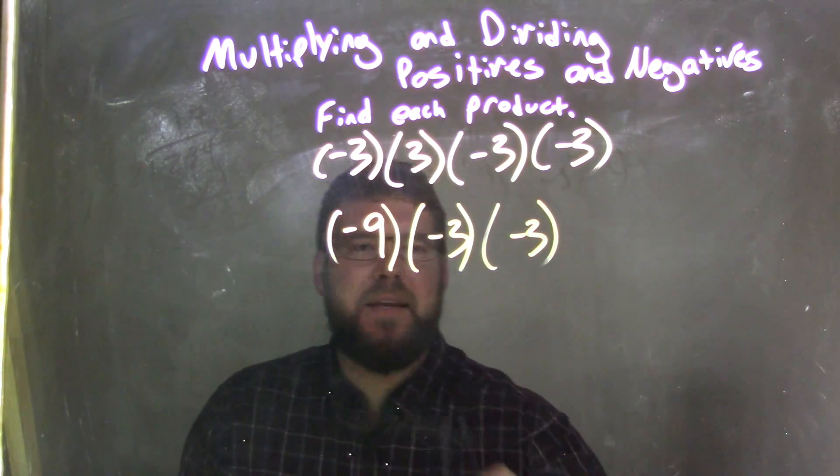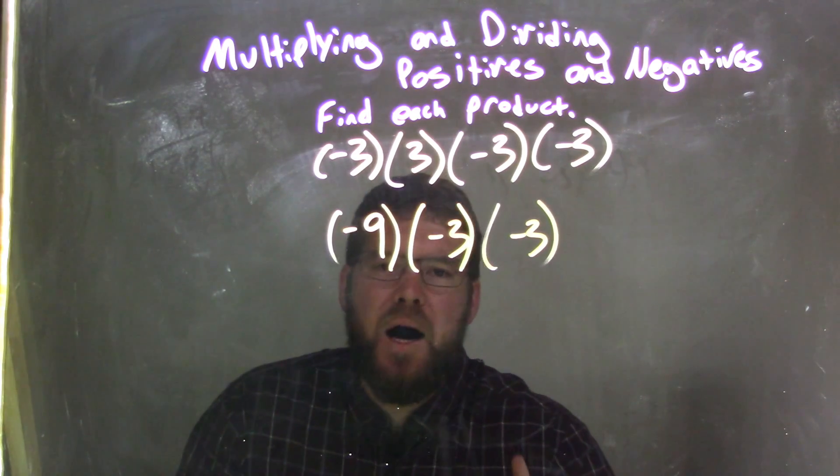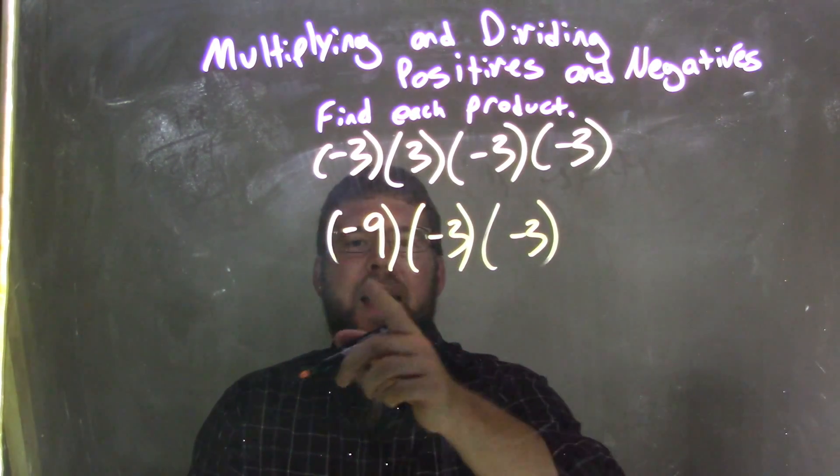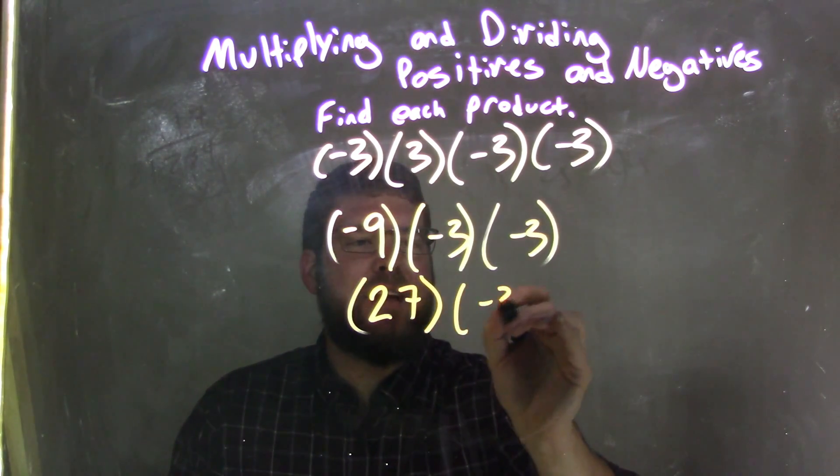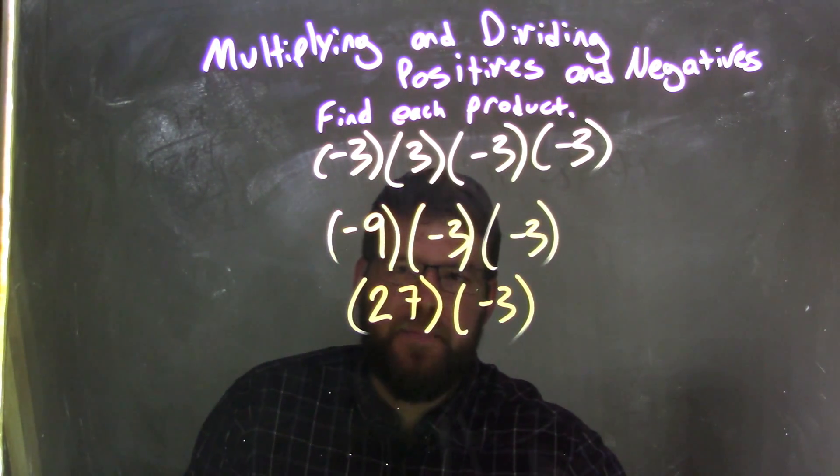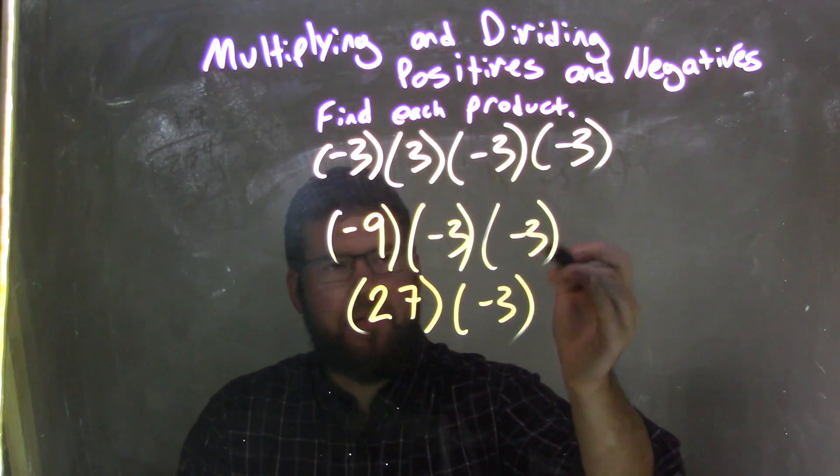So negative 9 times negative 3, that's a positive 27. A negative times a negative is a positive. So now we have a positive 27 here and we have a negative 3 right there on the side. We bring down this last negative 3, this last one right here.